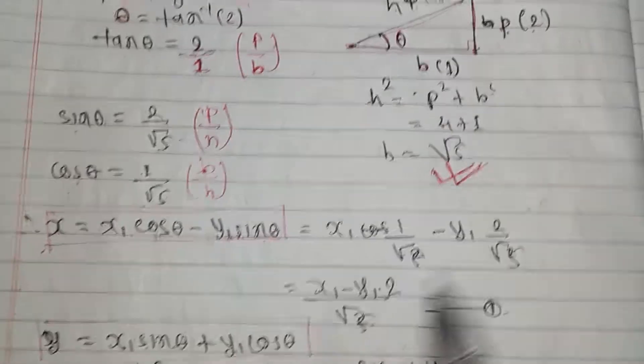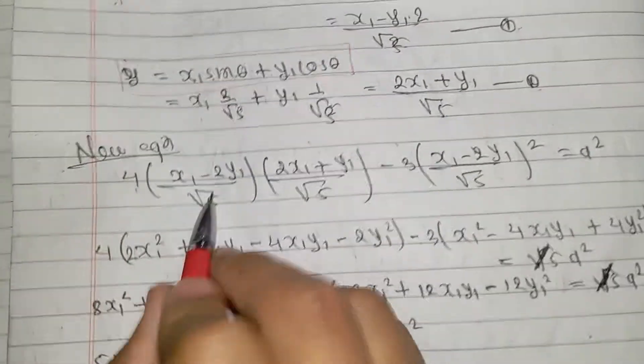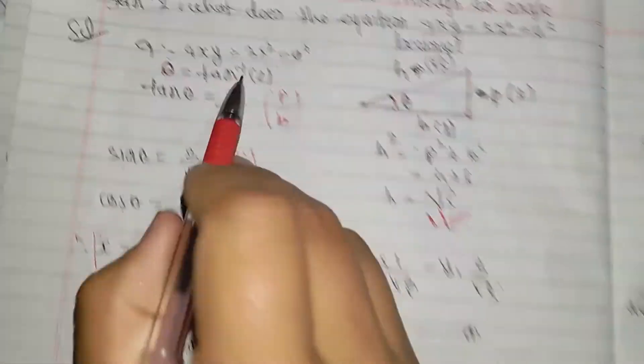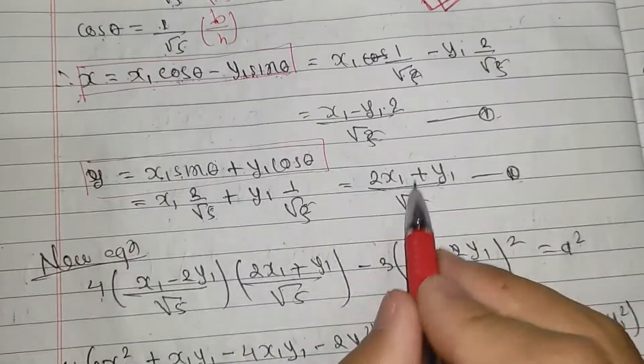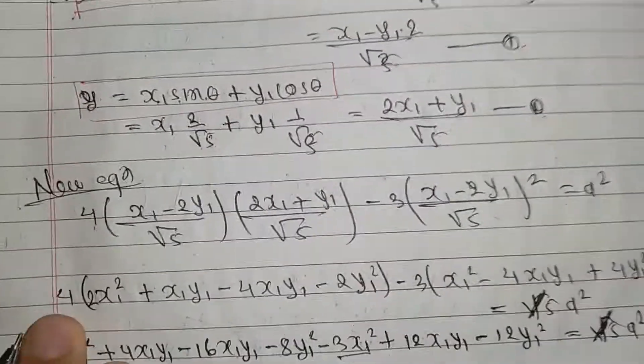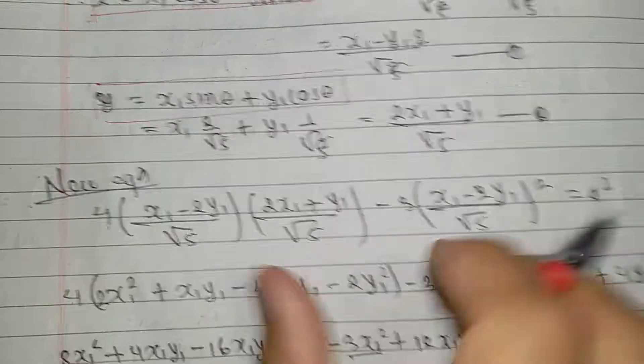For xy minus 3x square equals a square, substitute the values and simplify the problem.